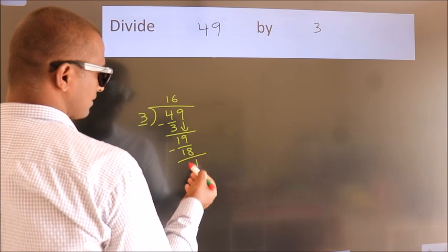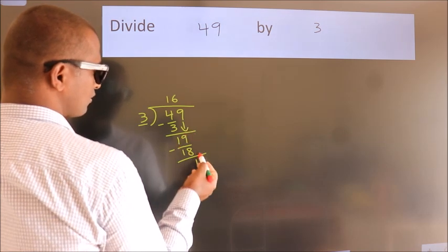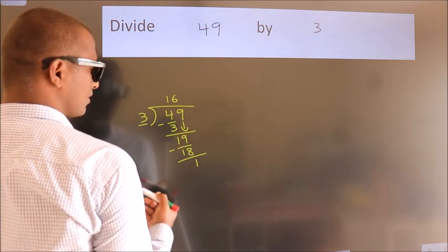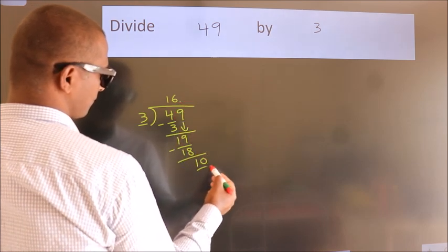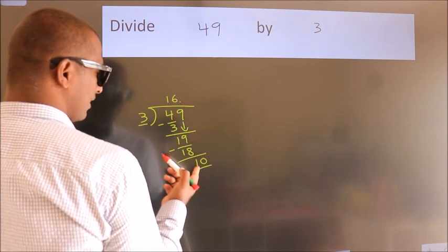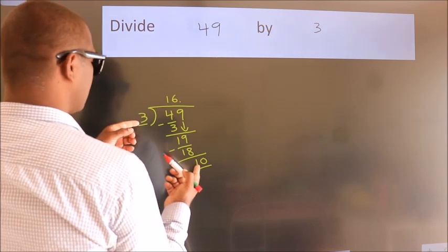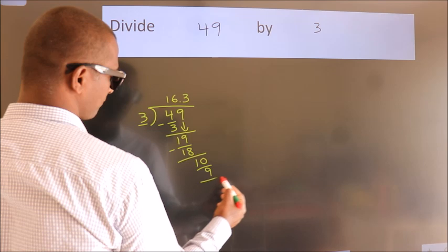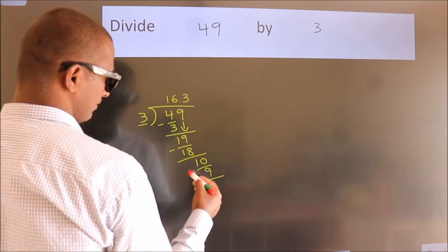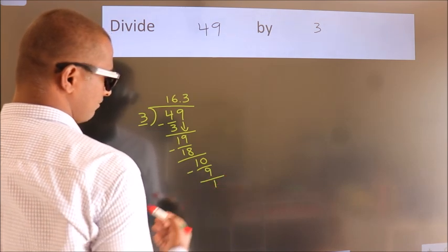After this, no more numbers to bring down. So what we do is, we put dot, take 0. So 10. A number close to 10 in the 3 table is 3, 3 is 9. Now we subtract. We get 1.